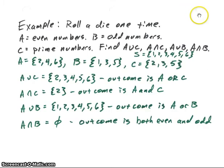Let's look at an example of those. Again, we're going to roll a die one time. But our event A will be the event of even numbers, B will be the event of odd numbers, and C will be the prime numbers. And we're going to be finding A union C, A intersect C, A union B, and A intersect B.